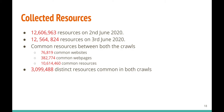From these crawls we collected about 12.6 million resources on June 2nd and 12.5 million on June 3rd. We focused on resources common to both crawls, since differences could be due to pages or resources no longer existing. About 76,000 websites, 382,000 web pages, and 10.6 million resources were common across both days. From those 10.6 million resources, about 3.1 million were distinct, since many resources appeared on multiple websites.